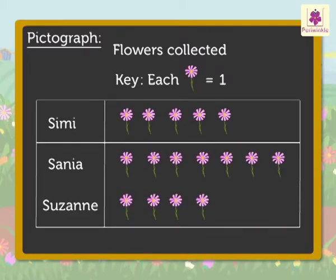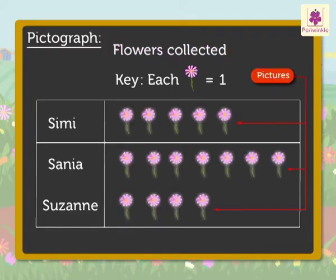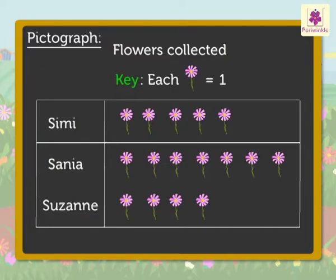We should be able to collect information from a pictograph by reading it. Every pictograph has: one, a title which tells us what the pictograph is about; two, pictures which tell us the given number of objects; three, labels which tell us what kind of data is shown; and four, the key which tells us the number each picture is equal to.